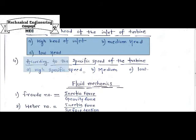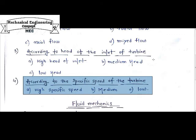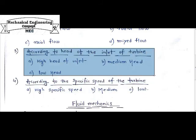The fourth classification is according to the specific speed of the turbine, symbolized as NS. There are three basic specific speed ranges on the basis of which we can categorize the turbine: high specific speed, medium specific speed, and low specific speed — similar categories to the inlet head, but with different units.